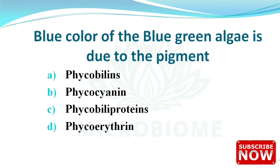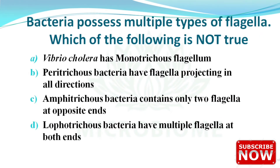Next: the blue color of blue-green algae is due to which pigment? The options are phycobilin, phycocyanin, phycobiliprotein, and phycoerythrin. The right answer is option B — phycocyanin.